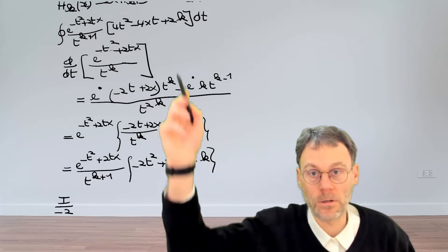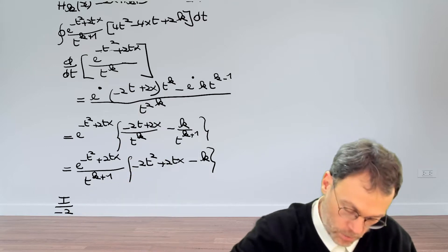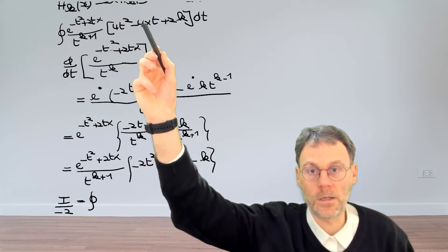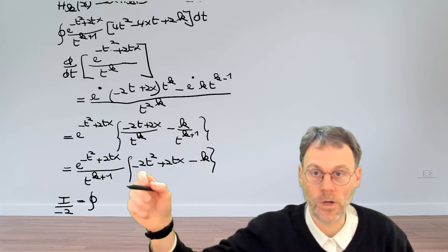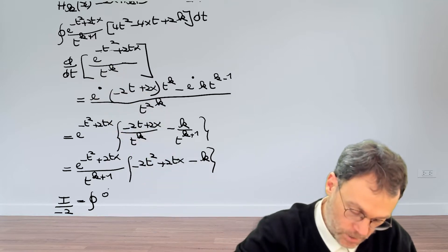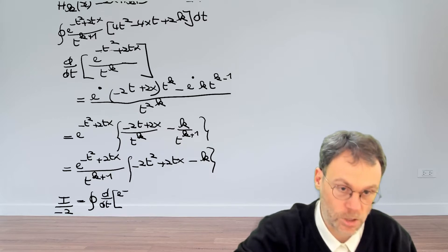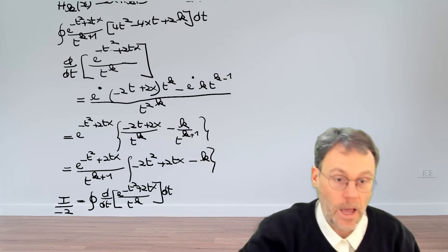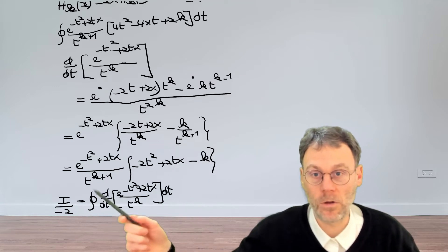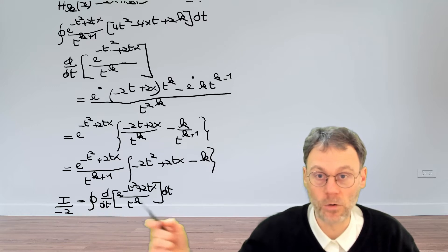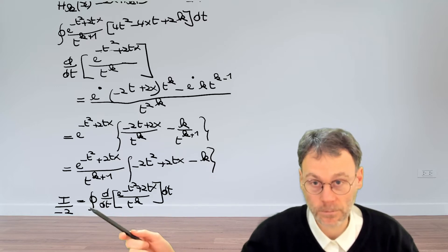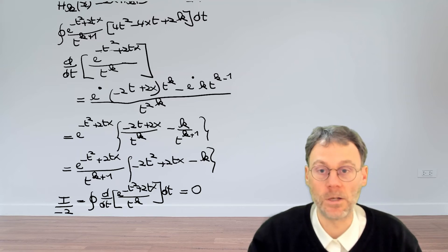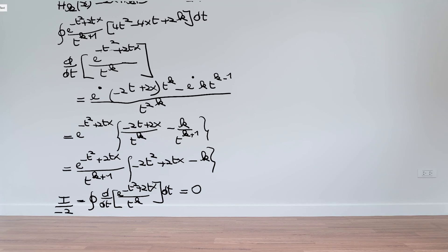What we've shown is that the integrand can be written as d/dt of exp(-t² + 2tx) / t^k. Now we have an integral of a total differential over a closed loop. Since the endpoint equals the beginning point, the whole contour integral gives zero. As expected, this form also satisfies the Hermite differential equation.